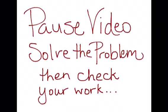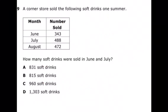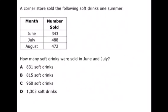Okay, so let's go. Welcome back, let's check your work. A corner store sold the following soft drinks one summer. How many soft drinks were sold in June and July? We're going to underline our question.